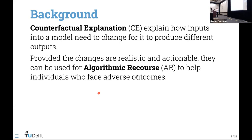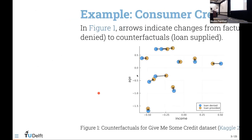Provided that these changes are realistic, plausible, and actionable, they can be used for the purpose of what we call algorithmic recourse — also referred to as individual recourse — which involves helping individuals who face a negative outcome in some real-world decision-making scenario.